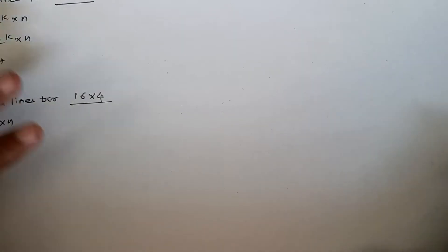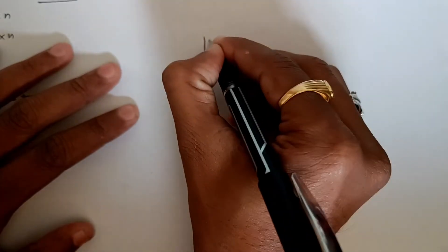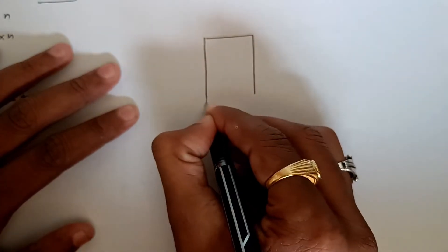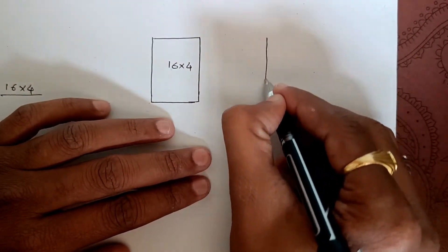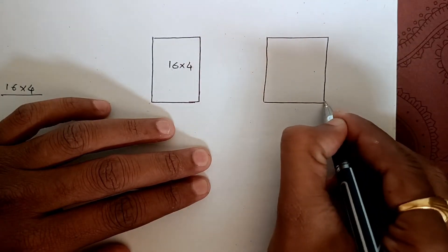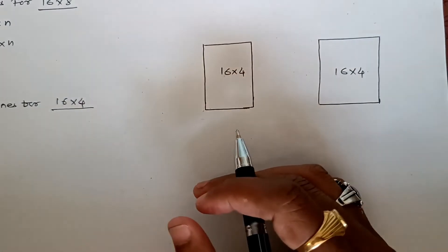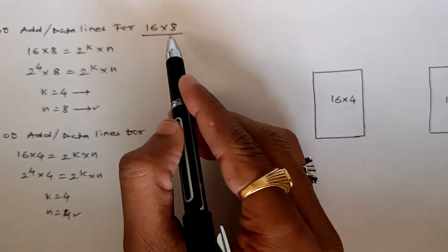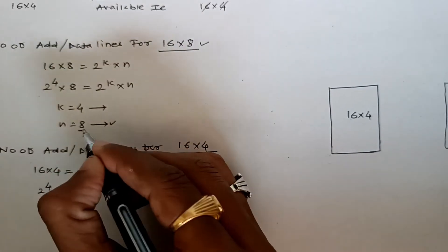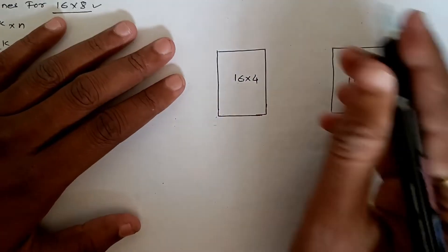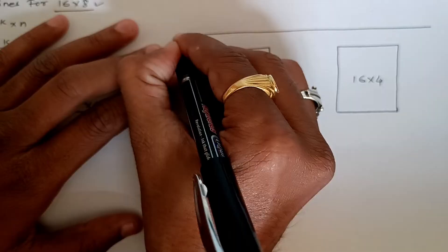First of all we'll take 2 ICs. This is our first IC, 16 by 4, and we'll take another IC, again the same 16 by 4. Now let's draw the data lines and address lines. Our requirement is to design 16 by 8, so we need 8 data lines.